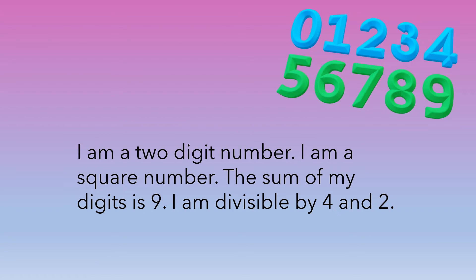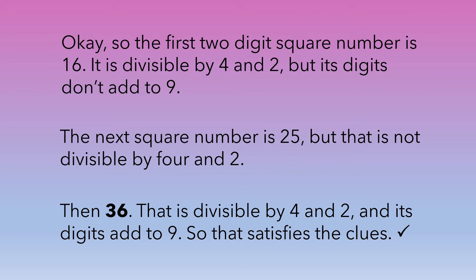The first two-digit square number is 16. It is divisible by four and two, but its digits don't add to nine. The next square number is 25, but that is not divisible by four and two. Then 36 —